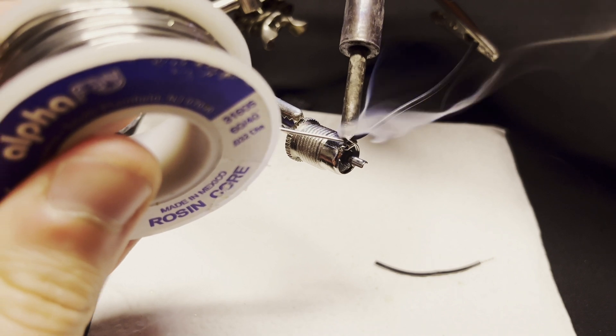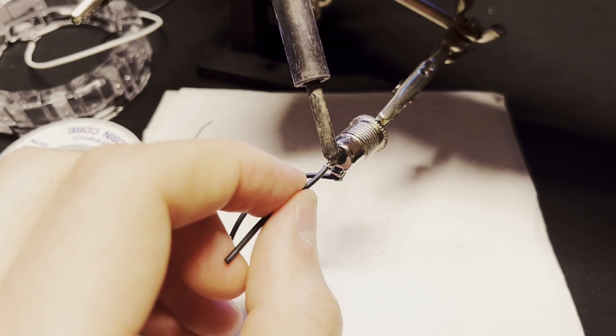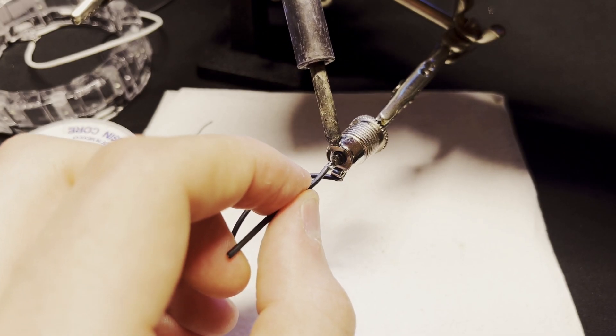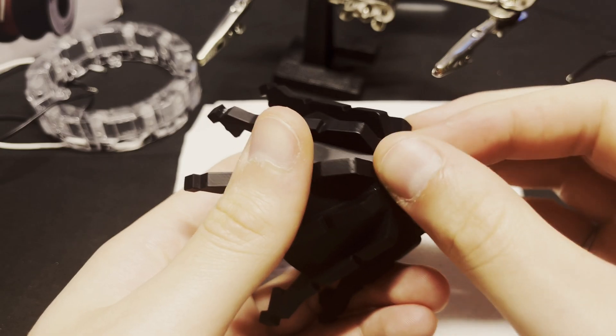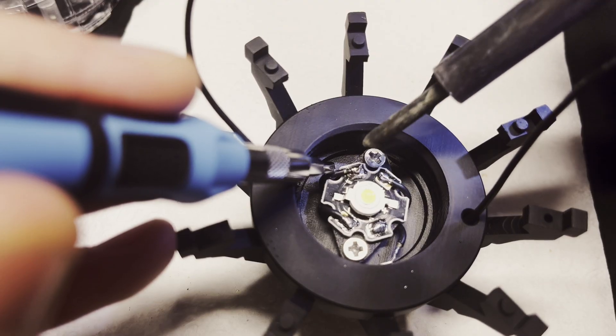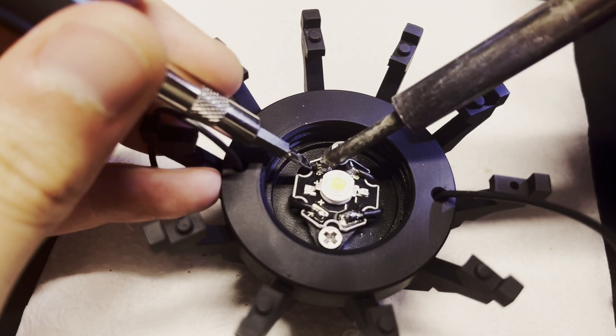After that's done I solder two short wires to the end of the female jack. I use the outer pin on the DC jack as ground and the center pin as the positive terminal. I screw the jack into the bottom of the main housing and solder the positive and negative wires to the main PCB LED.